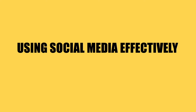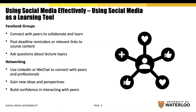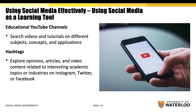Now that we have identified the main social media platforms, this section will provide tips and information on using social media effectively. Social media can be a great space for learning new skills and connecting with others in your program or field. Facebook groups and networking platforms such as LinkedIn or WeChat can be used to hear the perspectives and opinions of others and collaborate with your peers or professionals, which will also allow you to build your confidence in interacting with others. Educational YouTube channels such as Crash Course or TED Talks provide great sources to learn about different subjects, concepts, and applications, especially for auditory and visual learners. Searching by hashtags allows users direct access to opinions, articles, and video content related to a specific topic or industry on platforms like Instagram, Twitter, or Facebook.